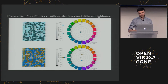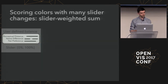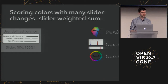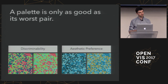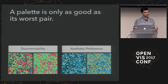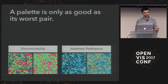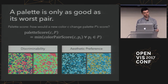How does Colorgorical use these things? It's a weighted sum. The sliders get converted into percentages from 0 to 100%, and for any two colors, Colorgorical computes the perceptual distance, name difference, and pair preference, applies the scalar, and you get a color pair score. There's also the assumption that palettes are only as good as their worst pair. Swapping out one color can cause very different appearances — a green and blue that are hard to discriminate, or a mustardy yellow that's less preferable on average.